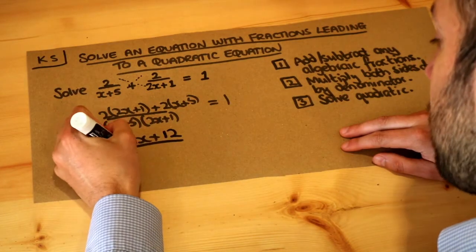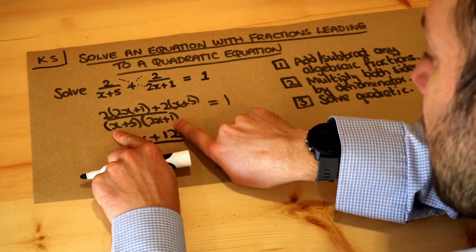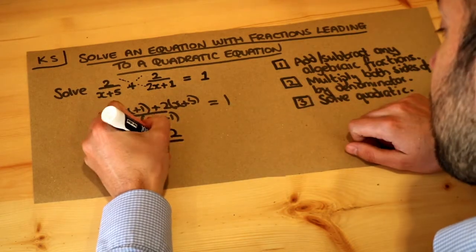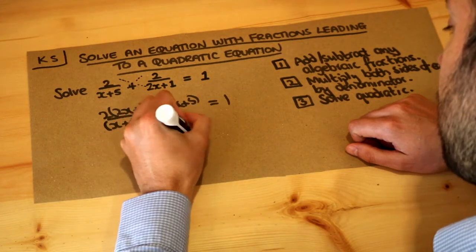So x times 2x is 2x², we've got 10x there and another x which is 11x, and we've also got 5 times 1 which is 5. That equals 1.